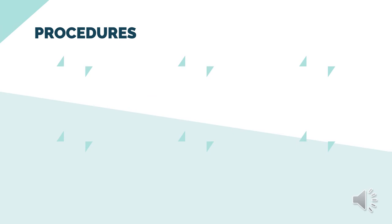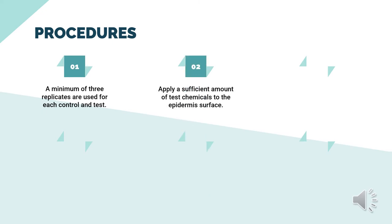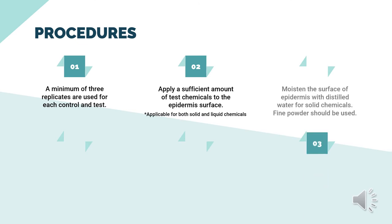The following are the general procedures for skin irritation toxicity testing. First, a minimum of 3 replicates are used for each control and test. Secondly, apply a sufficient amount of test chemicals to the epidermis surface — this is applicable for both solid and liquid chemicals. Next, wash the surface of the epidermis with distilled water for solid chemicals. If using powder, fine powder should be used.